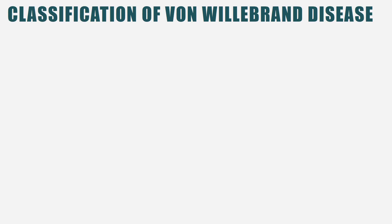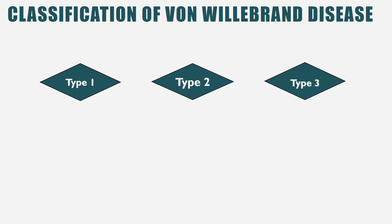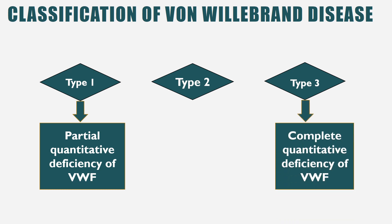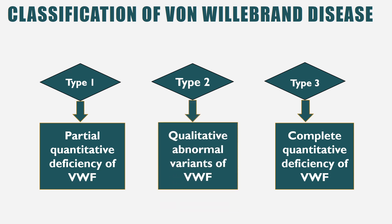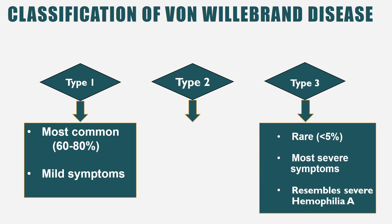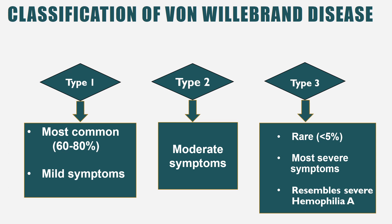Von Willebrand disease is classified into three types: type 1, 2, and 3. Types 1 and 3 are quantitative defects, while type 2 is a qualitative defect. In type 1 there is partial deficiency; in type 2 there is a qualitative abnormal variant. Type 1 is the most common, present in 60–80% of cases, with mild bleeding manifestations. Type 3 is the rarest, present in less than 5%, with severe bleeding resembling severe haemophilia A due to complete deficiency. Type 2 presents with moderate bleeding manifestations.